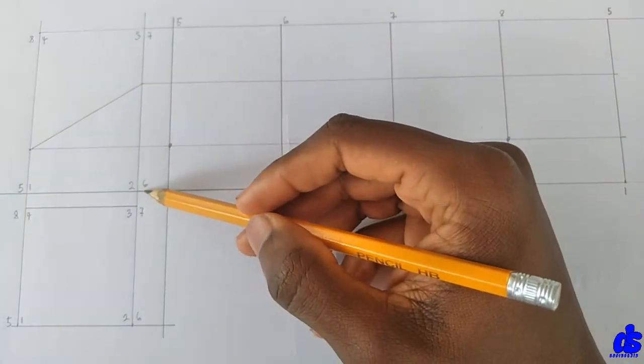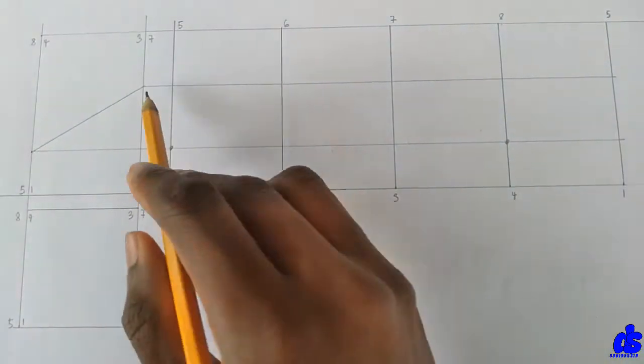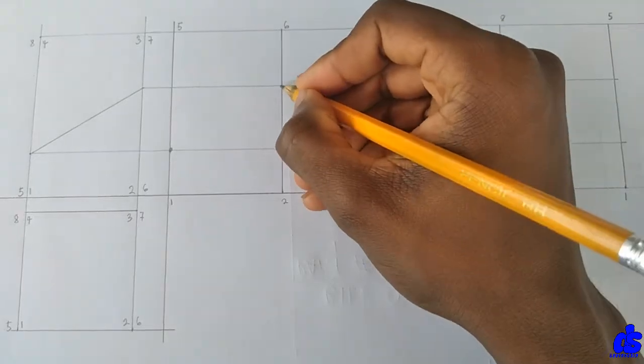Next we have 2634. Now coming, following this line. We have 26 here. We mark here.